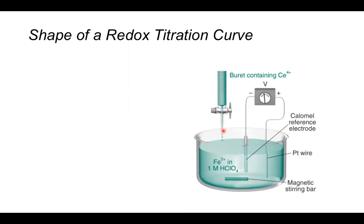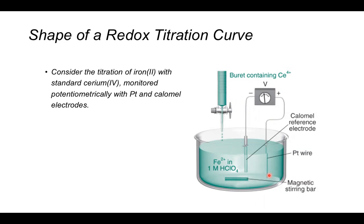A typical redox titration setup has the burette containing either the oxidant or the reductant — depending on the type of titration — with a known concentration, analogous to the acid or base in the burette. The analyte is in the beaker at the bottom. Instead of a color indicator, we have a potentiometer to measure the change in potential as we add the titrant. The setup also includes a saturated calomel reference electrode, a platinum wire indicator electrode, and a magnetic stirring bar.